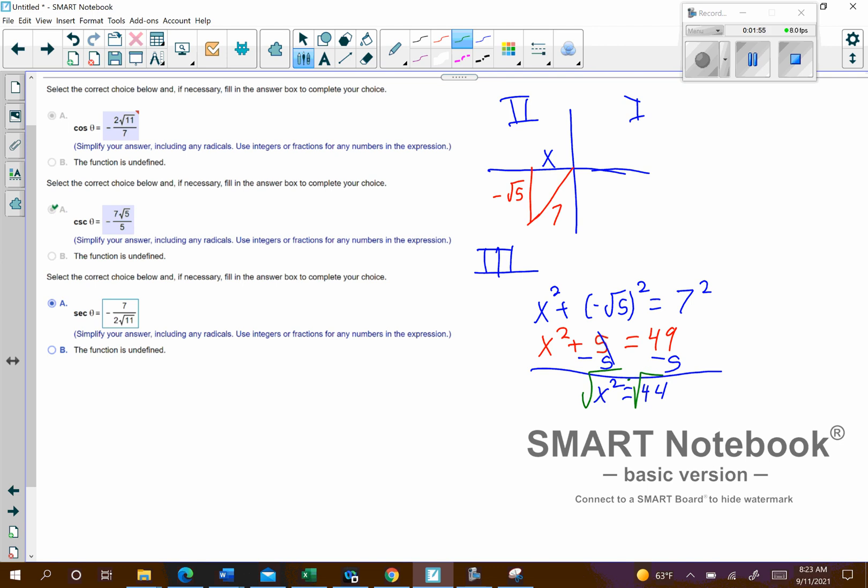And so we'll put negative out in front of there. And so let's see. So then we end up with x equals negative. I'm going to break that up into the square root of 4 times the square root of 11, which then gives us x equals negative 2 square roots of 11.